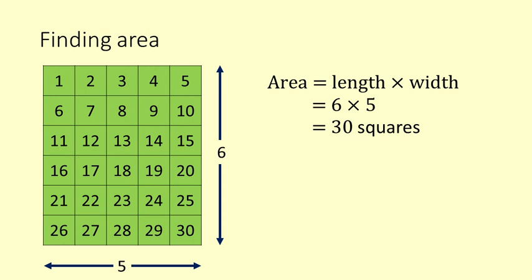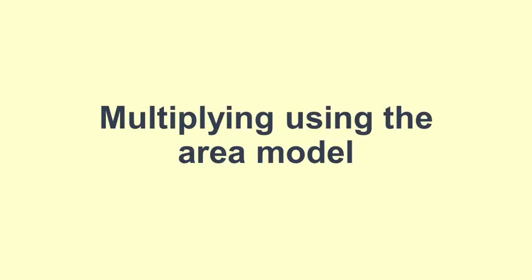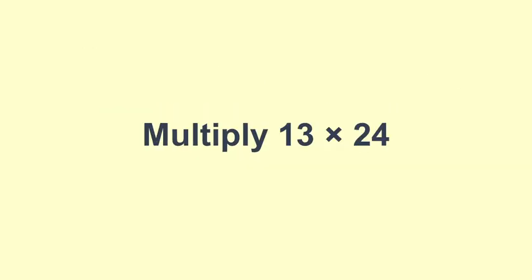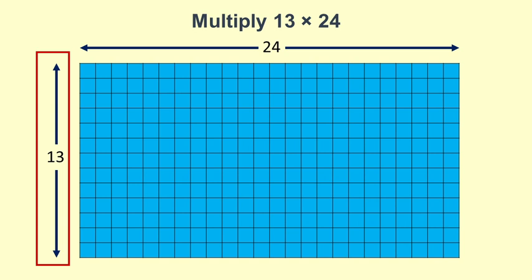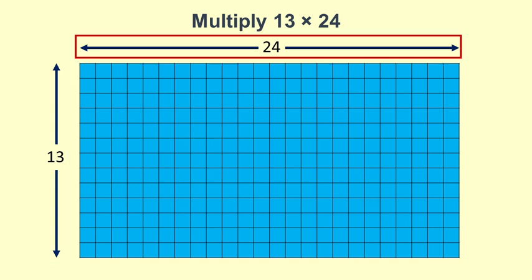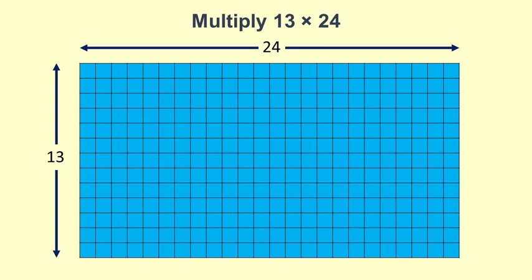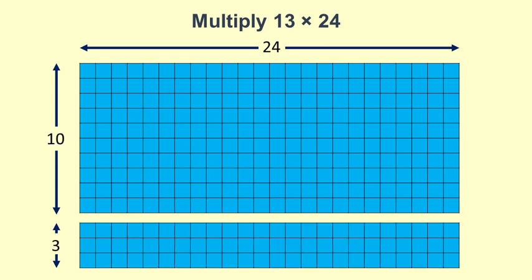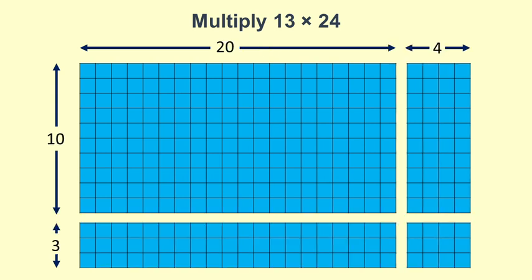The following is a progression towards understanding the area model. Say we wanted to multiply 13 by 24. We can represent this in terms of squares. There are 13 rows of squares and each row has 24 squares in it. We can divide up the 13 rows into 10 rows plus 3 rows. We can divide the 24 columns into 20 columns plus 4 columns.